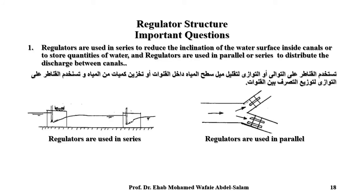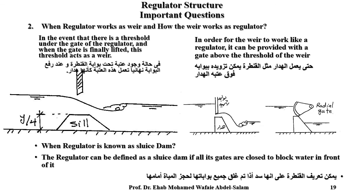Important questions: Regulators are used in series to reduce undulation of the water surface inside canals or to store quantities of water. Regulators are used in parallel to distribute the discharge between canals. The choice between series or parallel depends on the purposes of the system.